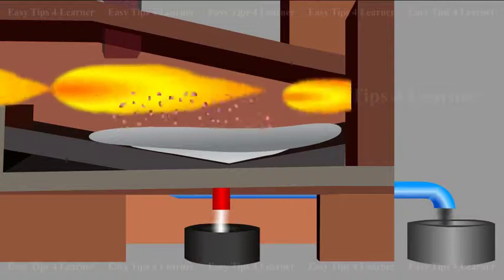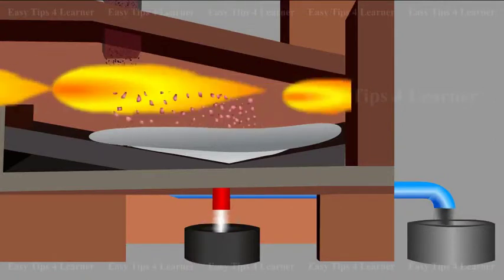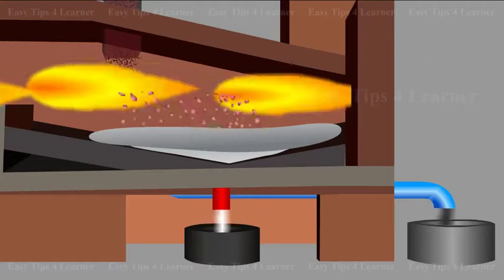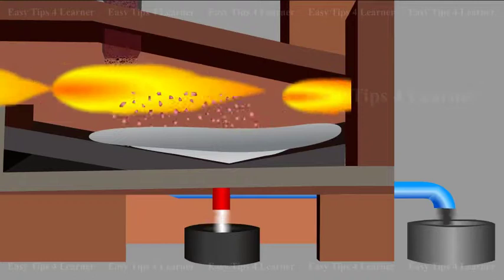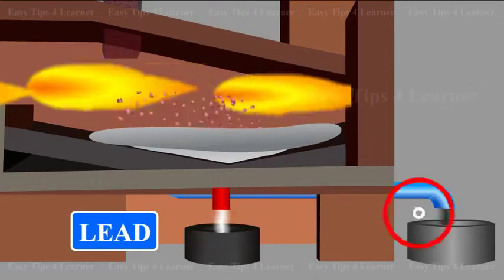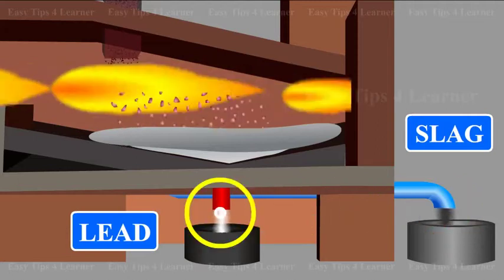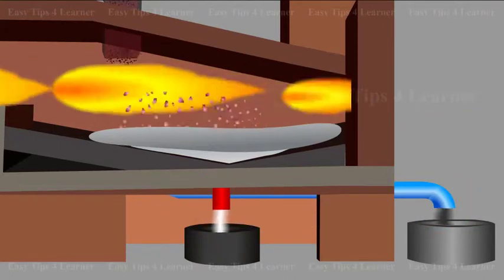Thus, in this process, roasting and smelting are carried out in the same furnace at two different temperatures. About 90% of lead is obtained as metal. The rest passes into slag. Lead is recovered from the slag by heating with lime and powdered coke.